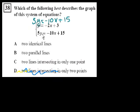So if you just multiply both sides by 5, they become the same equation. 5y is equal to minus 10x plus 15. So they are the same lines. So that's A, two identical lines.